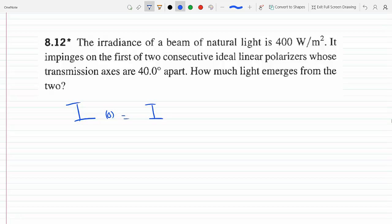It will be I_max or I at zero or I_initial over 2, because it's kind of like an implicit function. So this will be 400 divided by 2, which is 200 watts per meter squared. This is the irradiance after the first polarizer.